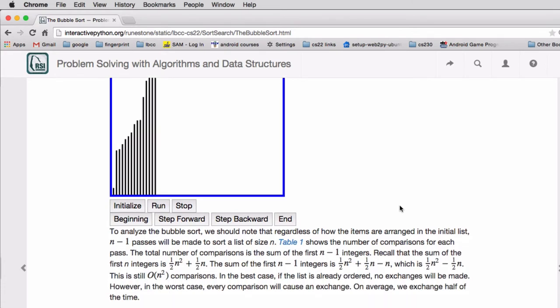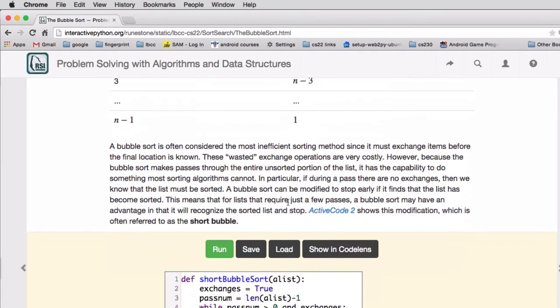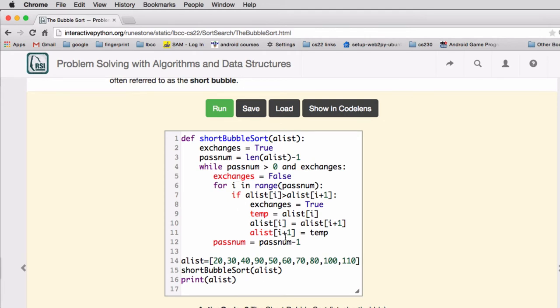One thing about bubble sort: in the first pass it goes through the whole list. If it finds nothing out of order, it can actually quit early. In this code you can see how he detects that he gets all the way through the first loop.